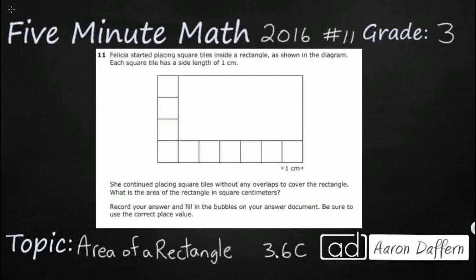We have a rectangle here with some square tiles. These square tiles each have a side length of one centimeter, giving us a reference. Since it's a square, all sides are the same, so each of these squares has the same measurements—one centimeter for each side.